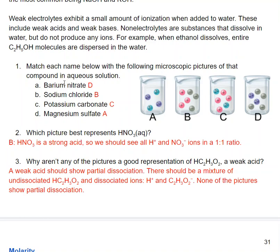For potassium carbonate, potassium has a plus one charge and carbonate has a minus two charge. So I'm going to need twice as many plus ones as minus twos, which matches beaker C.